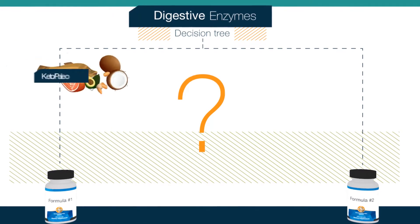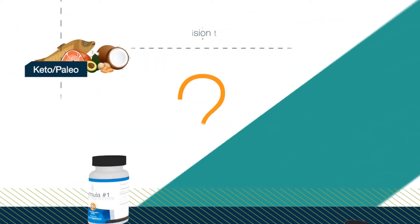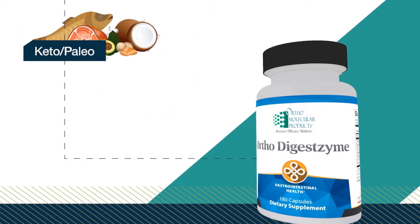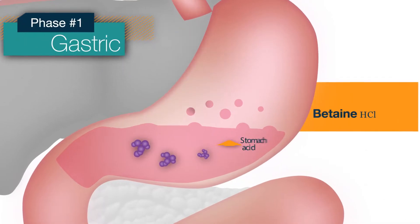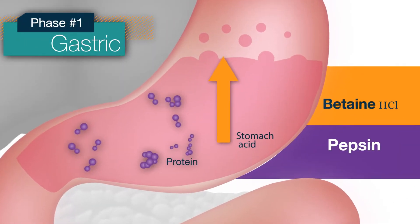Perfect for patients on a ketogenic or paleo diet, Ortho-Digestzyme provides two phases of digestive support strategically designed to digest protein and fat. In the gastric phase, betaine acidifies the stomach and pepsin initiates protein breakdown.